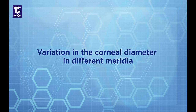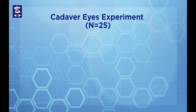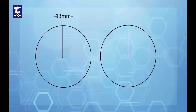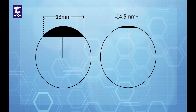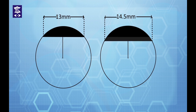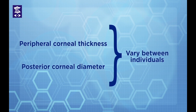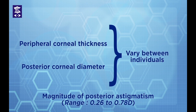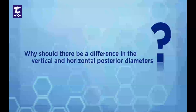The second factor is variation in corneal diameter. Twenty-five cadaver eyes were subjected to measurement of vertical and horizontal diameters on the posterior surface using a digital caliper. Results showed that the mean vertical diameter was significantly greater than the horizontal diameter. As the diameter increases in the vertical meridian, its sagittal height also increases correspondingly, making it steeper compared to the horizontal meridian. Since both these factors vary between individuals, this may also explain the wide variation in the magnitude of posterior astigmatism, which may range anywhere between 0.26 to 0.78 diopters.